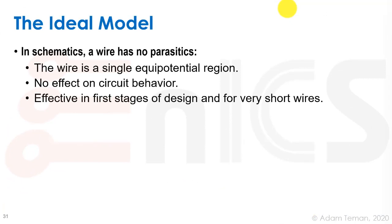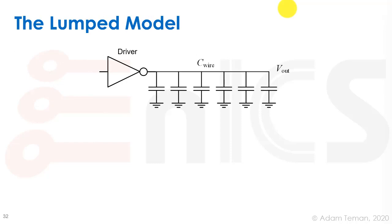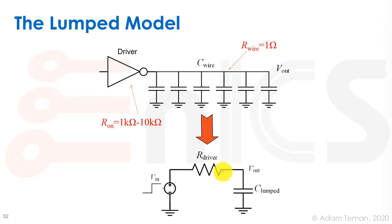In a schematic, the wire has no parasitics — it is a single equipotential region with no effect on circuit behavior. This is effective for short wires and early design stages. If we add a parasitic model, we use a lumped model: resistance is negligible, so all wire capacitances are in parallel. The driver has an on-resistance of perhaps a few kilo-ohms, the wire only an ohm — negligible. Added in series with the driver's on-resistance, it becomes negligible, and we get a simple RC model where TPD = 0.69RC.